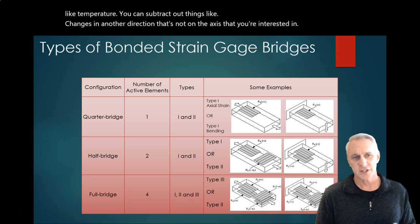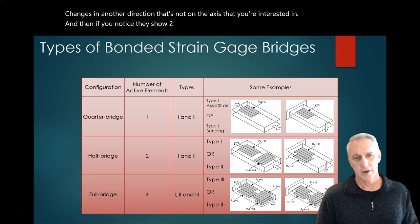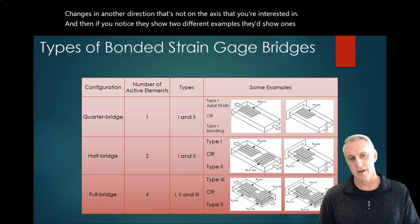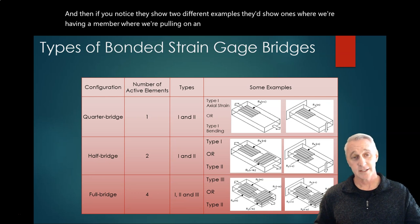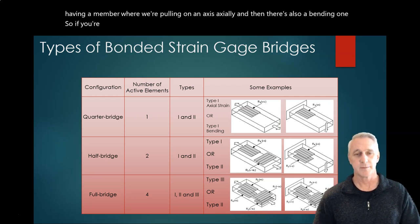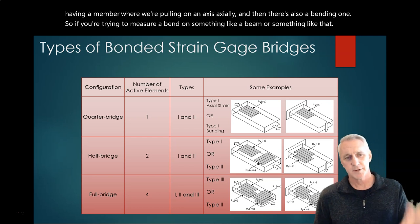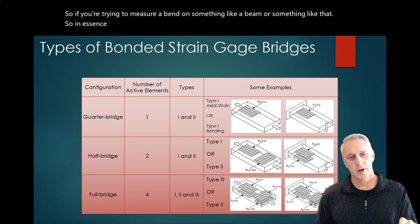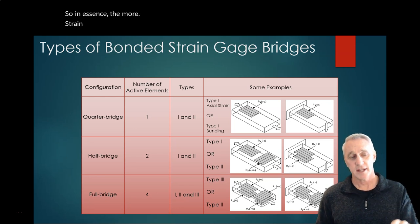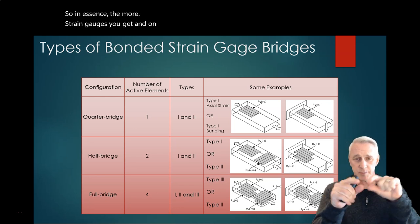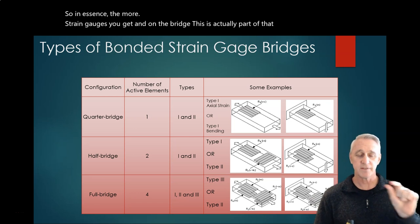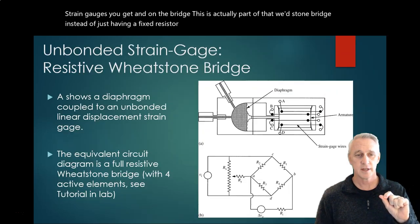And if you notice, they show two different examples. They show ones where we're having a member where we're pulling on an axis axially, and then there's also a bending one - if you're trying to measure a bend on something like a beam. So in essence, the more strain gauges you get on the bridge - and this is actually part of that Wheatstone bridge - instead of just having a fixed resistor in one of those spots, you actually can make them strain gauges themselves.